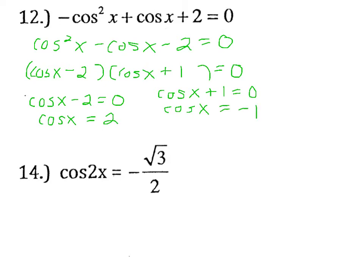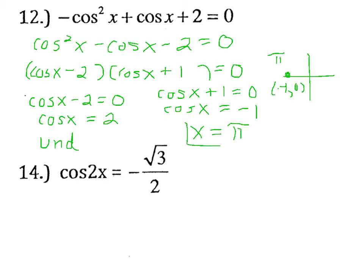We have cosine x plus 1 equals 0, or cosine x equals negative 1. We need to find the angles that give us a cosine of 2 and a cosine of negative 1. For cosine of 2, it would require an adjacent side of 2 but a hypotenuse of 1, which is undefined because we cannot have a side bigger than the hypotenuse. But cosine equals negative 1 at the quadrant angle pi, because cosine is our x value and the x value is negative 1 at angle pi. So our only answer is x equals pi.